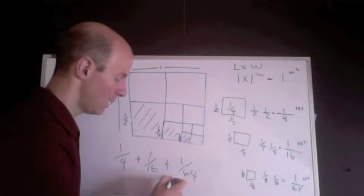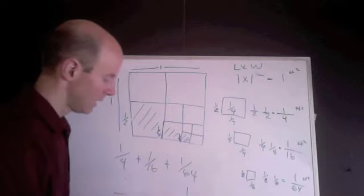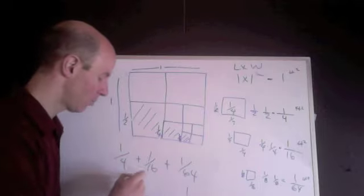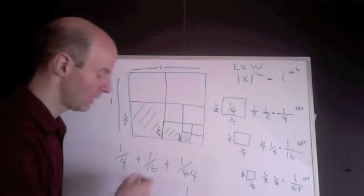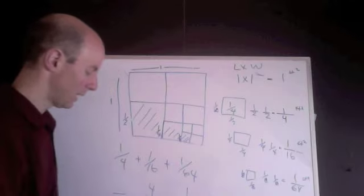So, I do 1 times 1, and I get 1. 16 goes into 64, hmm, 4 times. So, I just put a little 4 here to help me remember. 16 times 4 is 64. 1 times 4 is 4.